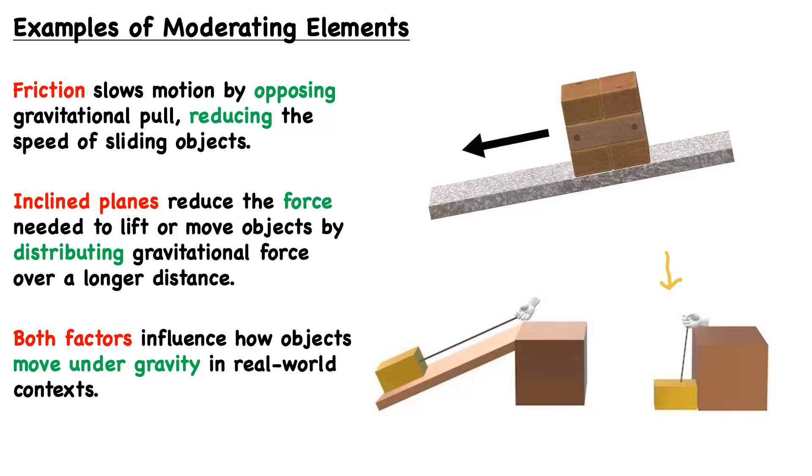Instead of using an inclined plane, the object can be pulled directly. We have the same situation where we have somebody holding one end of the string. The other end of the string is attached to this object, and this object is being pulled directly upwards against gravity.